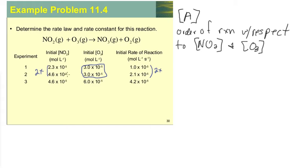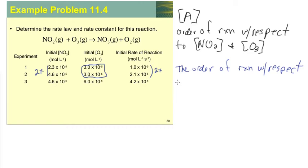The concentration of nitrogen dioxide was two times as great in experiment two, and the rate of experiment two was also twice as big as experiment one — close enough for experimental error. So the ozone remained the same, the nitrogen dioxide doubled, and the rate doubled. Therefore, the order of reaction with respect to the concentration of nitrogen dioxide is first order, because there was a one-to-one relationship between the change in concentration and the change in rate.